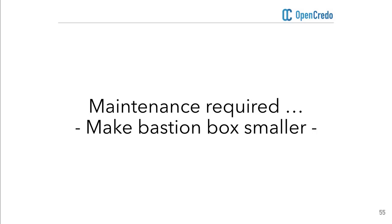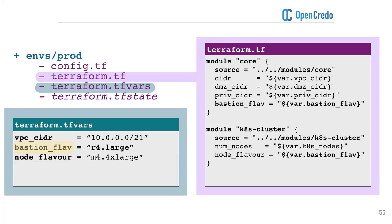Recently she got a heads-up from the finance guys who said the bastion box is really costing a lot of money, it's over-provisioned, and she needs to reduce the size. She reckons it's a really simple change and gives it to one of her new team members, Frankie. Frankie downloads the repository, locates the correct environment production file, finds the bastion_flavor variable set to R4 large, decides to make it an M4 large. He double-checks that it is indeed the variable going into his core module where the bastion box is defined. Everything looks good.